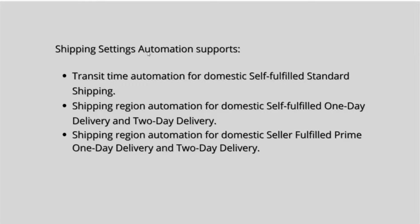Shipping settings automation supports the following. It allows you to select shipping services per shipping option, including self-fulfilled standard shipping, self-fulfilled premium shipping, and seller fulfilled prime. You should select the shipping services that you are using for these shipping options. All displayed shipping services in the shipping settings automation preference selector are eligible for selection.